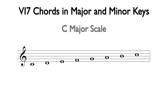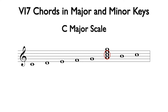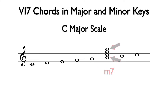Here is a C major scale. The sixth chord is based off of A. Using the notes from the scale to build the seventh chord, we can add C, E, and G above the A note. The bottom three notes spell an A minor triad, and the interval from A to G is a minor seventh. This is A minor seven, and we will use the lowercase sixth Roman numeral with a seven for the analysis.